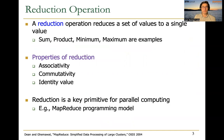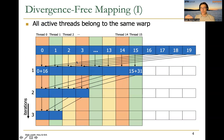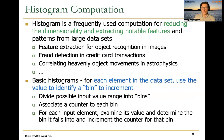Remember that in this course, we have already covered a couple of parallel patterns. The first one was the reduction operation, an operation that reduces a set of values to a single value. It needs to have certain properties like associativity, commutativity, and identity value. Then we talked about how to map these nicely onto a GPU and how to implement it with a divergence-free mapping.